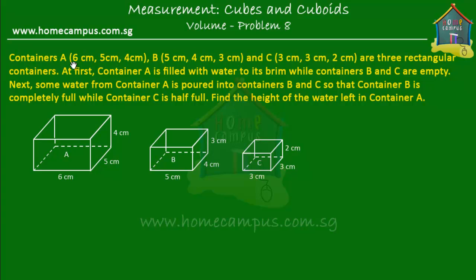So containers A, B, and C — each of the dimensions are given here, and the containers are drawn here with the dimensions on them. These three are rectangular containers, which means they are cuboids.